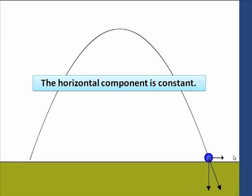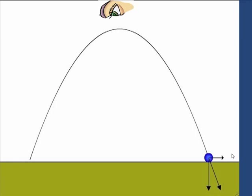If a huge eye were to look down from above on that motion, from way up high, it would see that projectile moving in a straight line at a constant velocity.